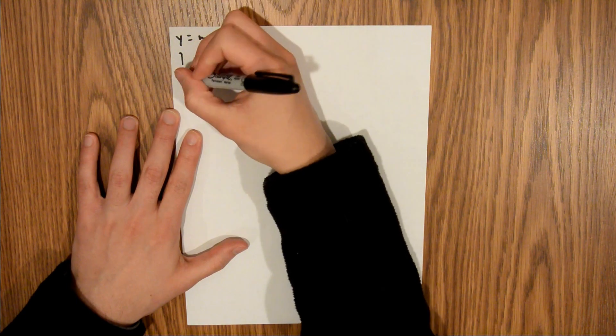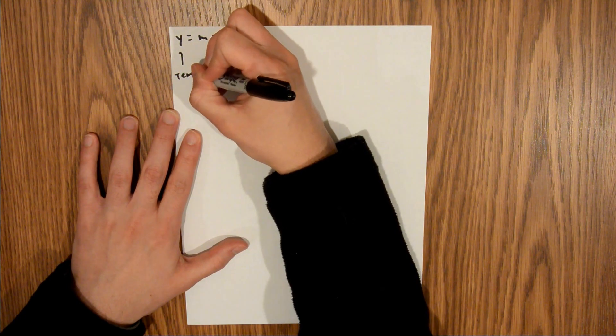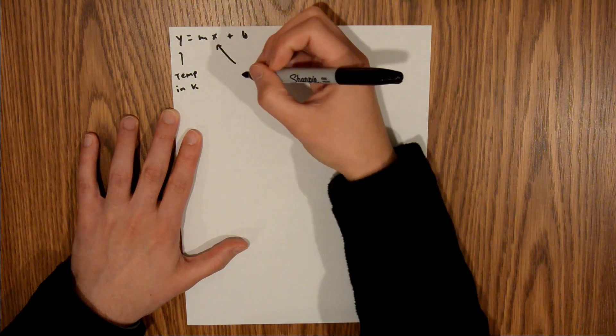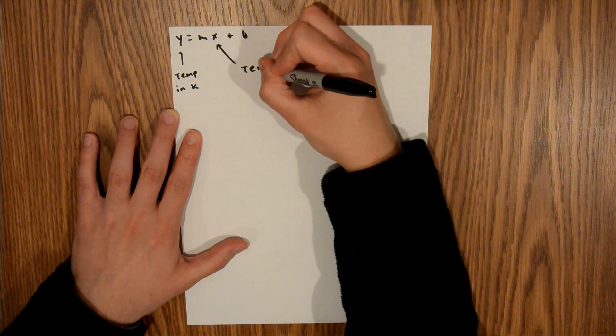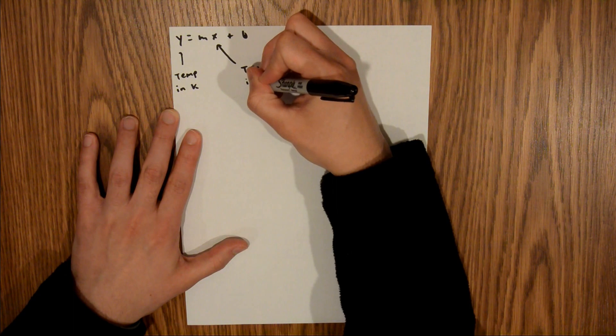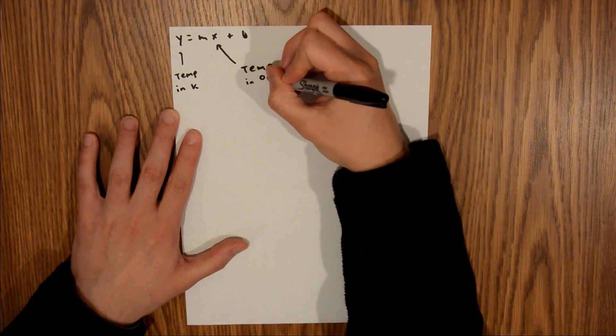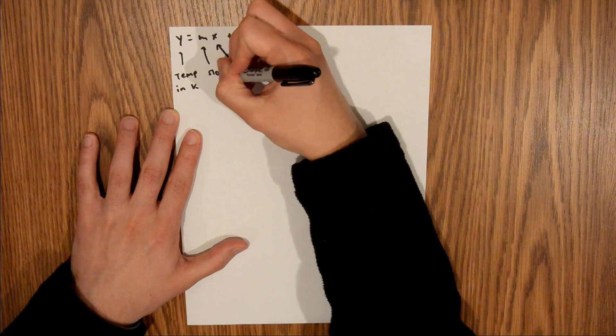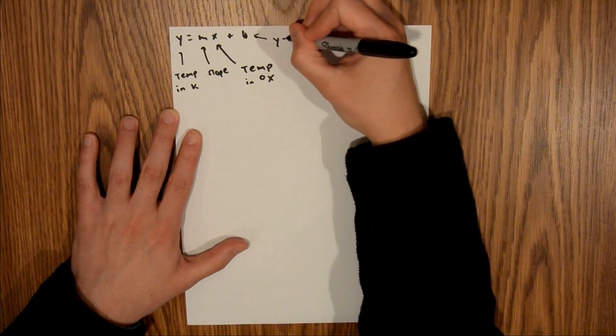where y is going to be our temp in Kelvin, x is going to be our temp in this arbitrary scale, degrees x, m is our slope, and b is our y-intercept.